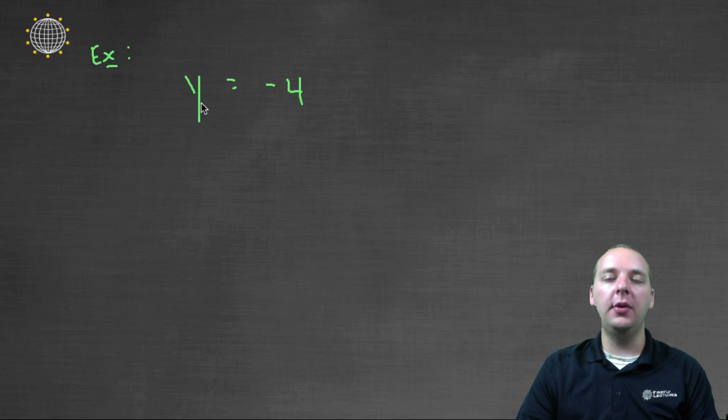You at least have to have one variable, but you can't have a variable that's squared, or cubed, or any variables in the denominator. But actually, believe it or not, this would be called a linear equation, y equals four.